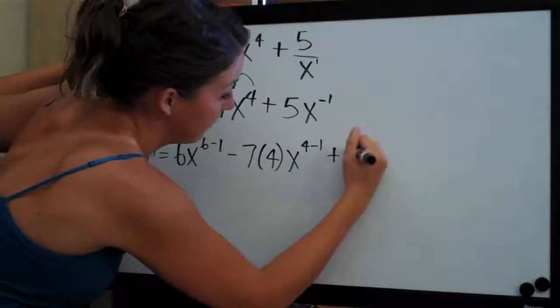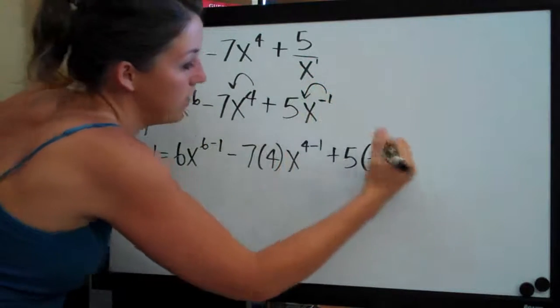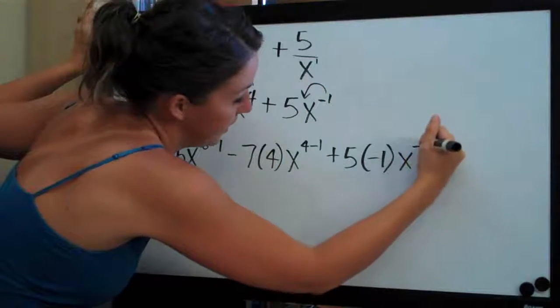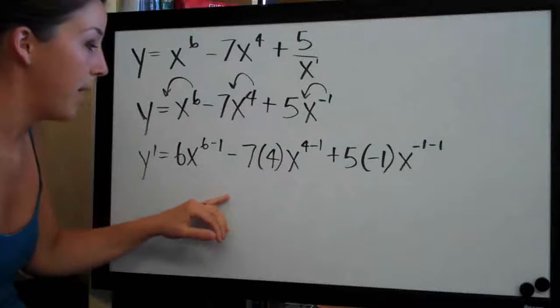And then plus 5 times negative 1, bringing the negative 1 out in front here, times x to the negative 1 minus 1. And that is essentially the power rule.